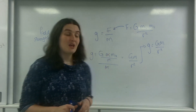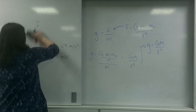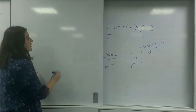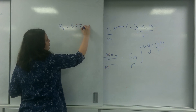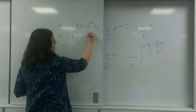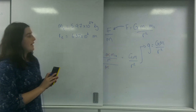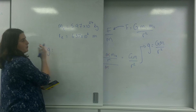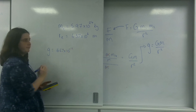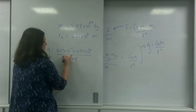Now we can calculate that using some data and see what g is for the Earth at its surface. Using information from the data sheet: the mass of the Earth is 5.97 times 10 to the 24 kilograms, and the average radius of the Earth is 6.37 times 10 to the 6 metres.